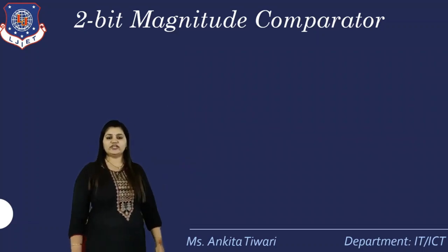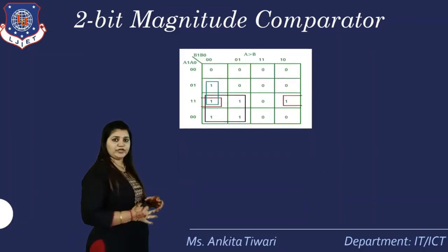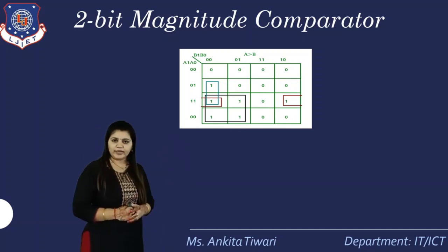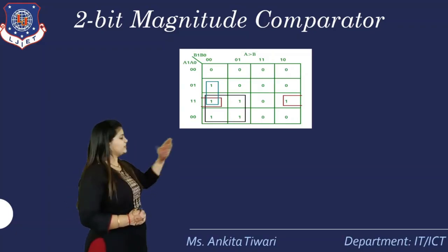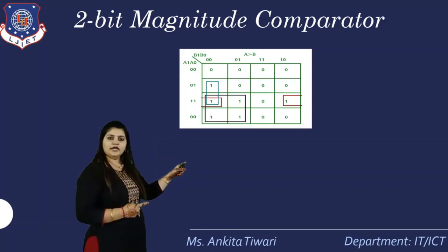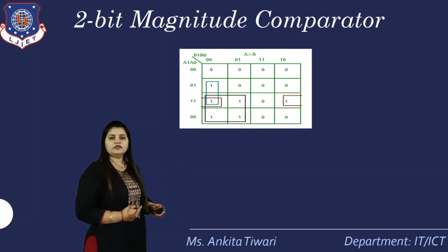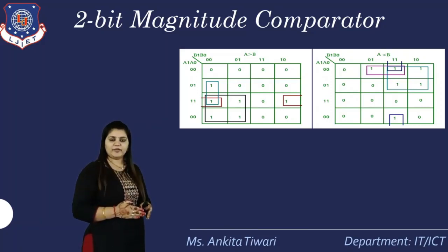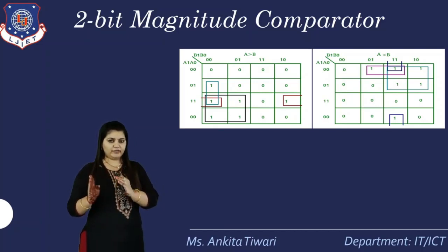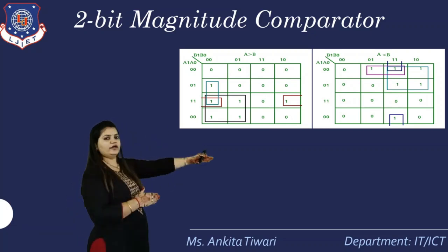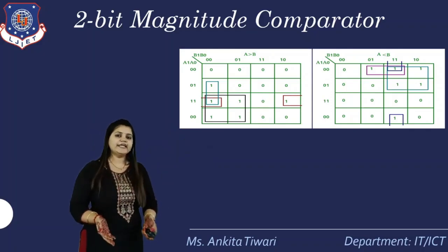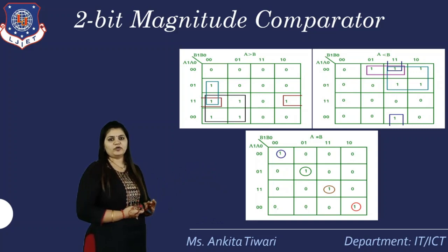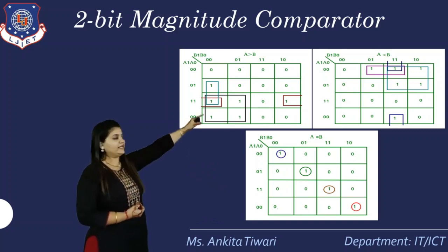With two-bit comparison, the equations will be more complex. We use K-maps to reduce them. The diagram consists of four variables: a0, a1, b0, and b1. We place the ones from the truth table into the K-map, reduce them, and derive the simplified equations. This is done separately for a greater than b, a less than b, and a equal to b. For the equal-to condition, reduction is not possible as all values remain distinct.